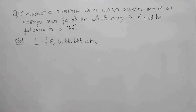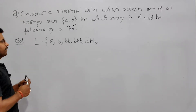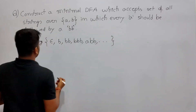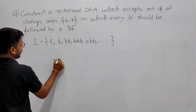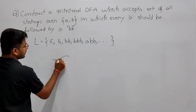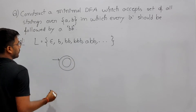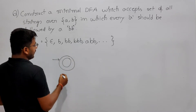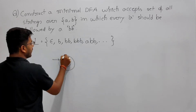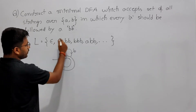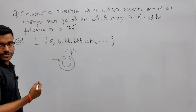Now for this language we have to construct a minimal DFA. Since it contains epsilon, I need to make the initial state also the final state. Now if it is getting any number of B's, we have to accept it, because any number of B's belongs to the language.